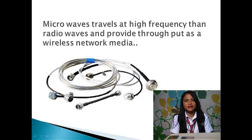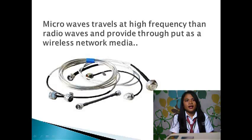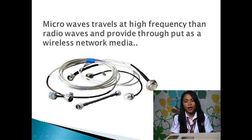Microwave travels at a higher frequency than radio waves and provides throughput for wireless network media. Microwave transmission requires the sender to be in line of sight of the receiver. There are two types of microwaves: terrestrial microwave and satellite microwave. Terrestrial microwaves are used to transmit wireless signals across a few miles and require parabolic antennas pointed at each other, operating in the low GHz range. Satellite microwave transmission is used to transmit signals throughout the world.